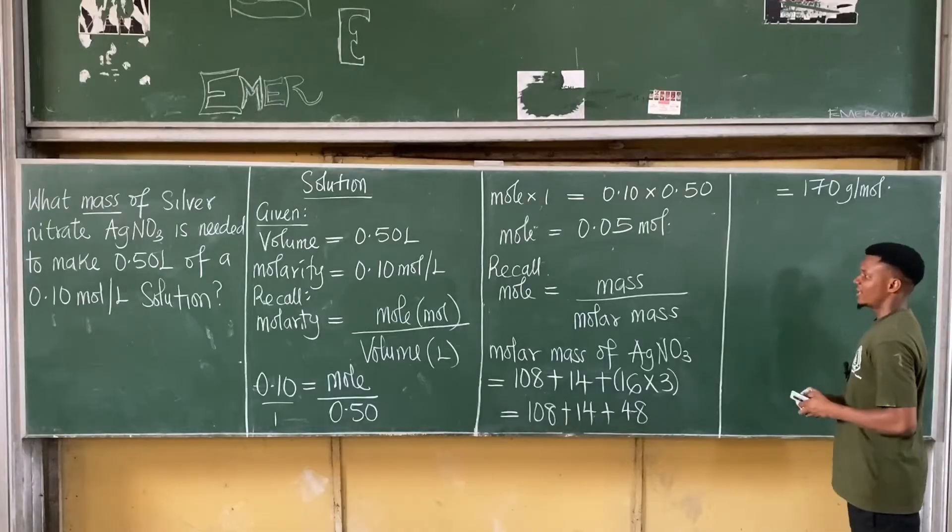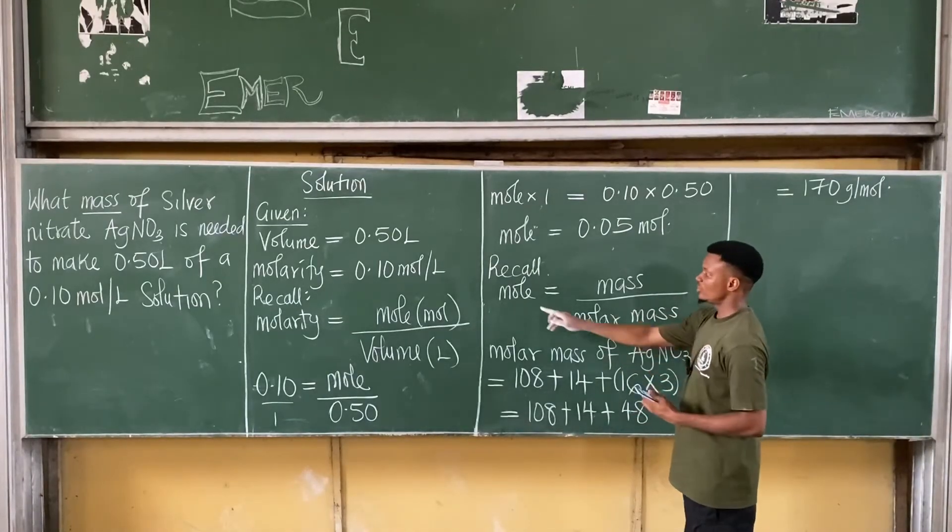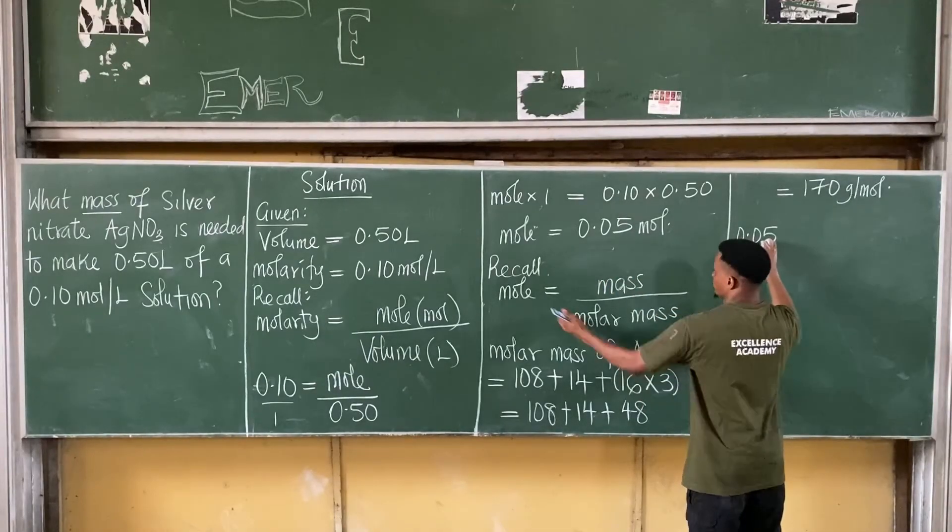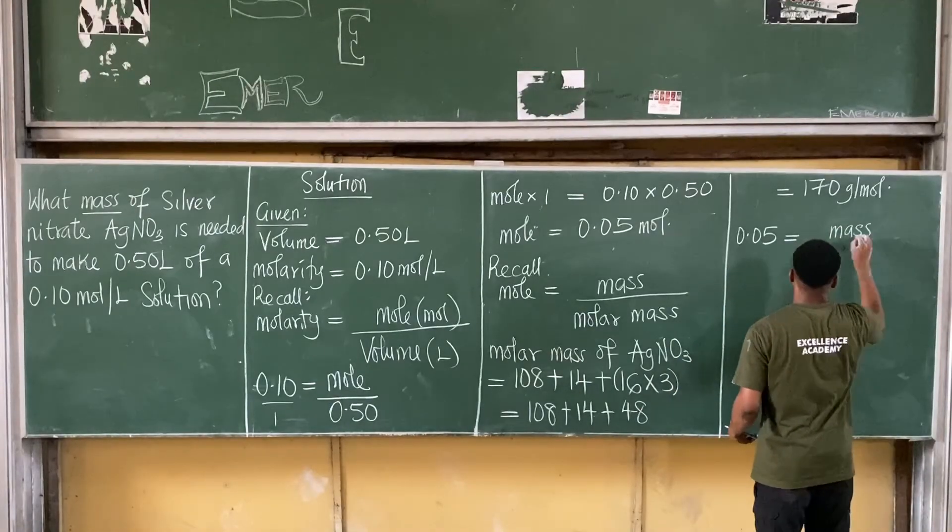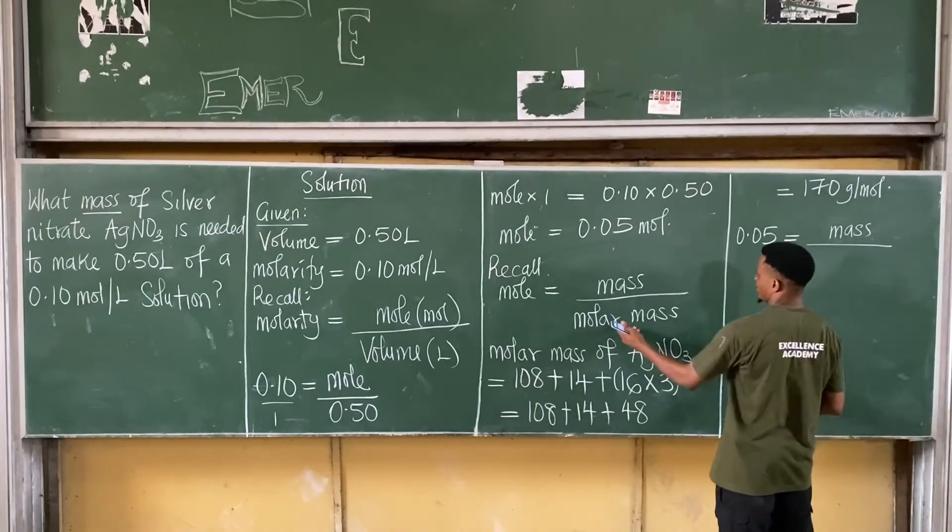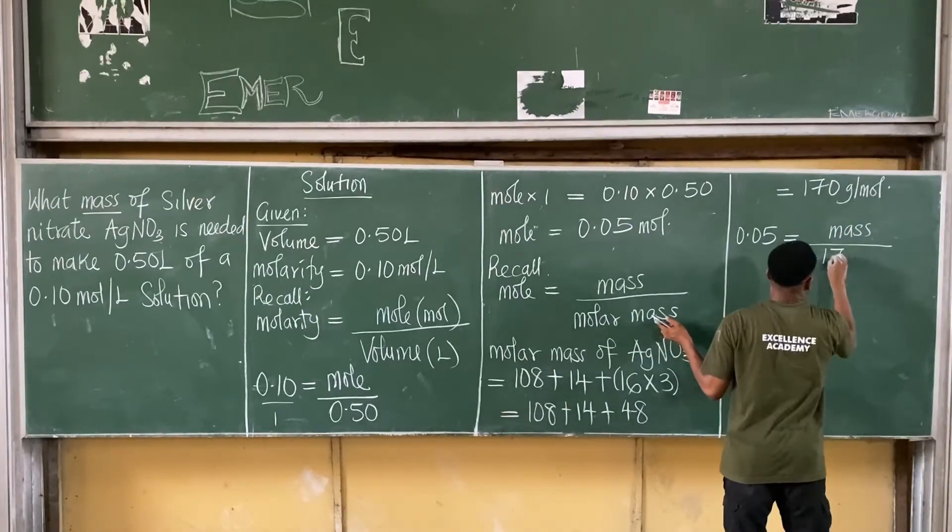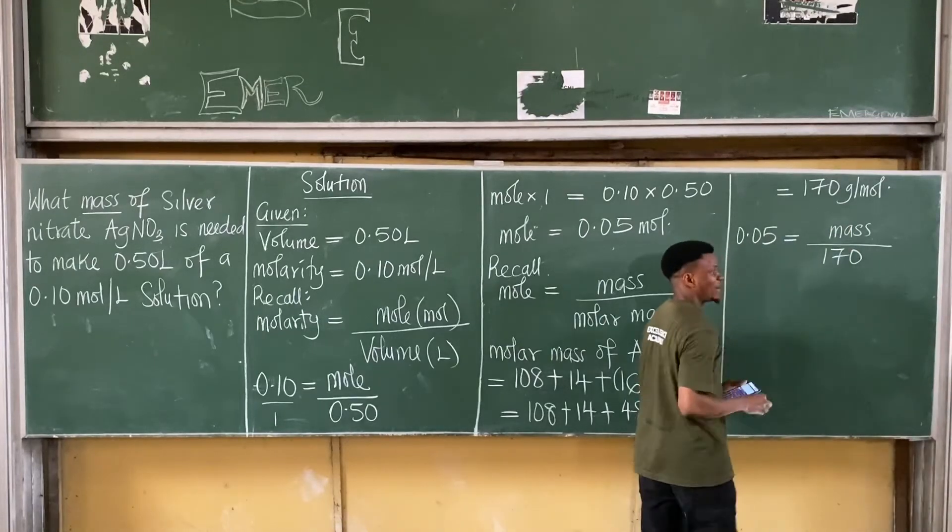So with this taken now, we can now get mass. Let's substitute values. The mole value as you calculated is 0.05, that's moles, is equal to the mass all over the molar mass. The molar mass as calculated here is 170. As you can see here, it was 170.